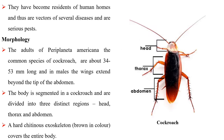They have become residents of human homes and thus are vectors of several diseases and are serious pests. Morphology: The adults of Periplaneta americana, the common species of cockroach, are about 34 to 53 mm long and in males, the wings extend beyond the tip of the abdomen.